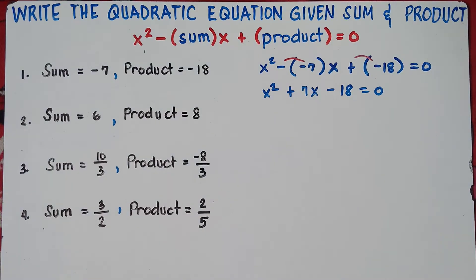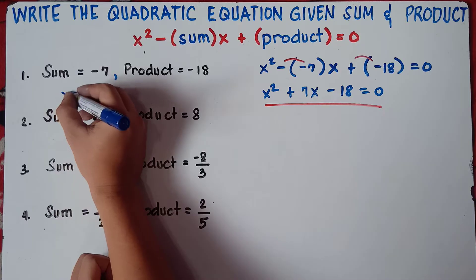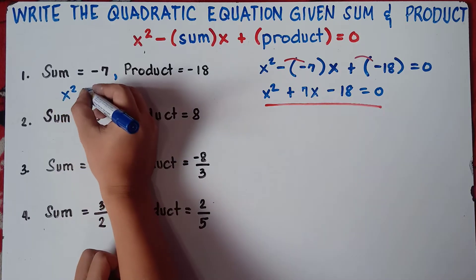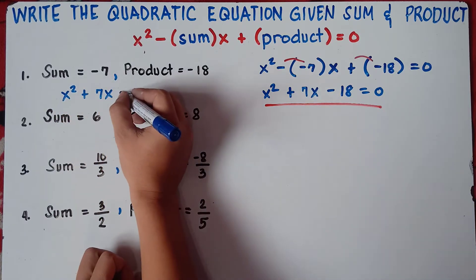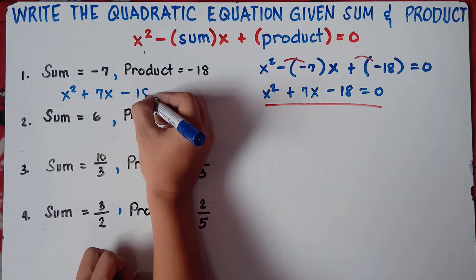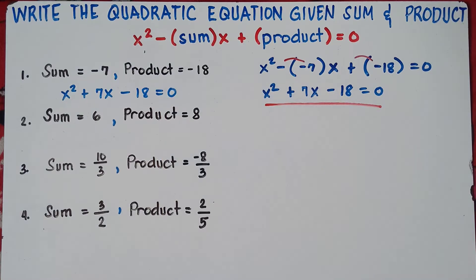That's it class. That's the answer for number 1. Easy, right? So we have x squared plus 7x minus 18 equals 0.